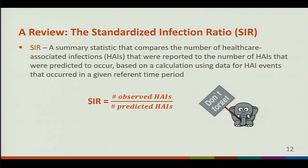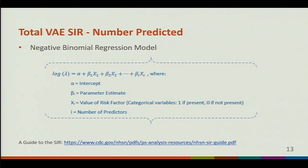A review of the standardized infection ratio: the SIR is the observed number of HAIs divided by the predicted number of HAIs, and this measure is used to compare the HAI experience among one or more groups to a standard population. The VAE SIR is calculated in two categories: the total VAE SIR and the IVAC plus SIR, and they both use the same negative binomial regression model.